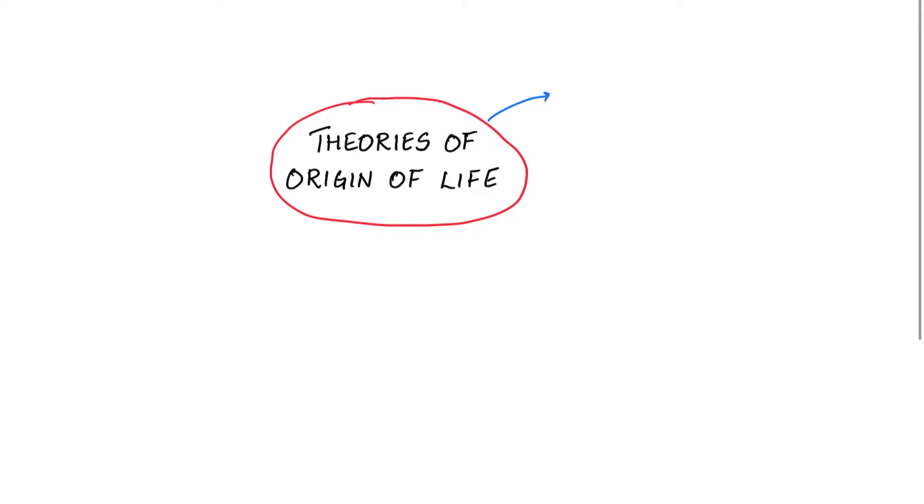Some believed that life came from outer space whereas some Greek thinkers suggested that units of life called spores were transferred to different planets including Earth.